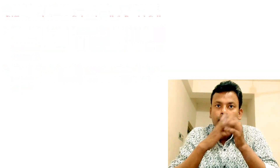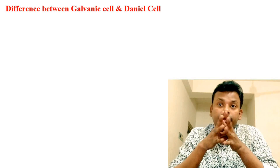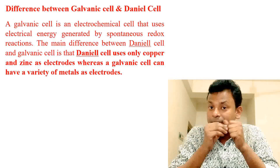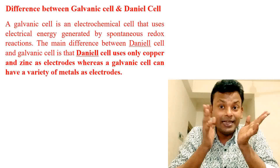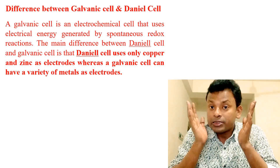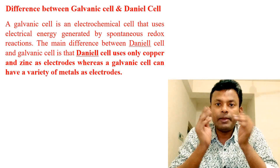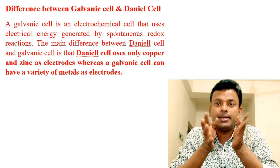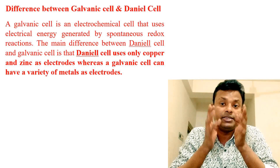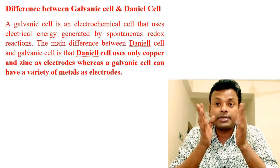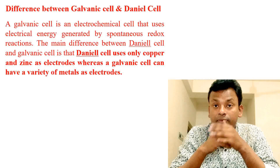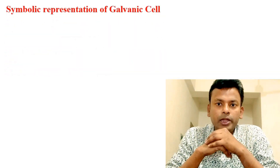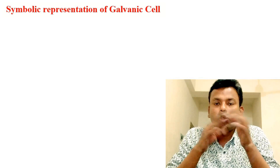The main difference between the Daniel cell and the galvanic cell: a galvanic cell is an electrochemical cell that uses electrical energy generated by spontaneous redox reactions. The Daniel cell uses only copper and zinc as electrodes, whereas a galvanic cell can have a variety of metals as electrodes.